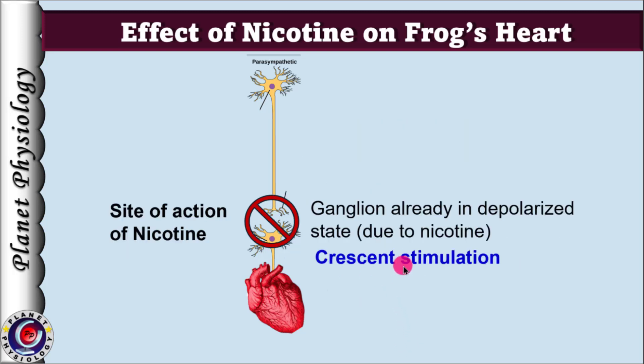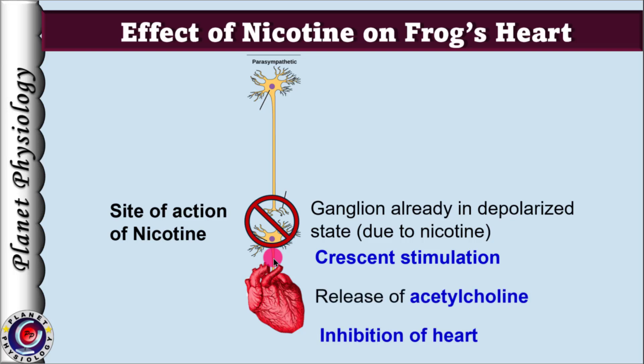In contrast, when we stimulate the crescent, we directly activate the postganglionic fibres, bypassing the blocked ganglion. This leads to release of acetylcholine at the heart, allowing it to stop. Thus, persistent depolarization of autonomic ganglia explains why the heart does not respond to vagal stimulation but still stops with crescent stimulation after application of nicotine.